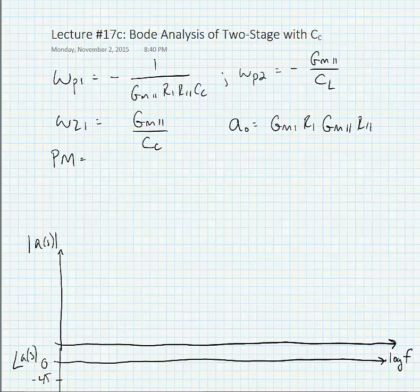So we found previously what our pole and zero frequencies were. We know that these are both left half plane poles and a right half plane zero.